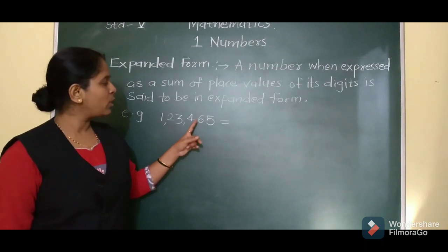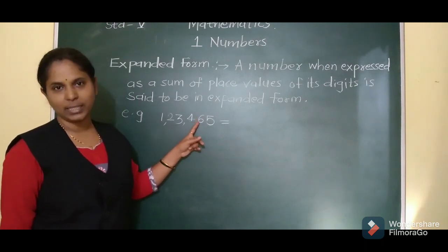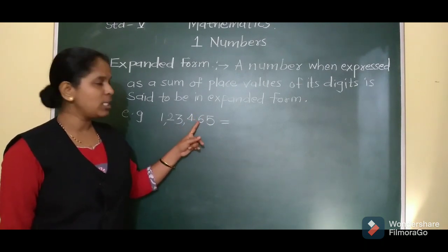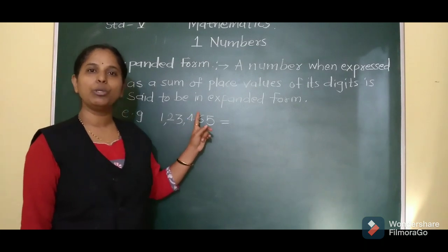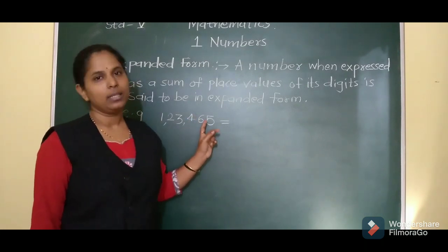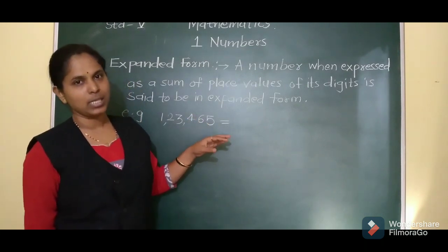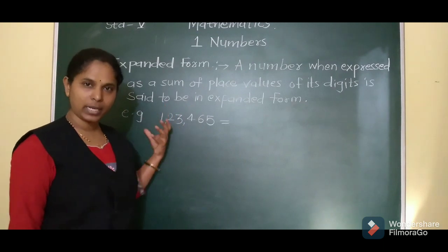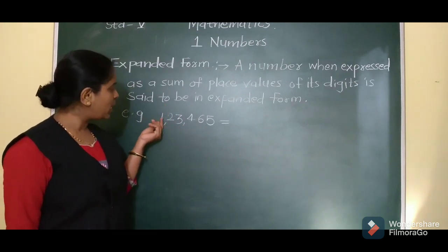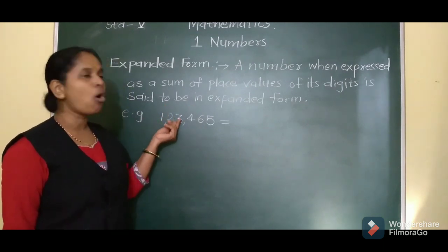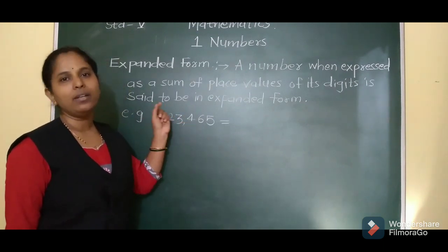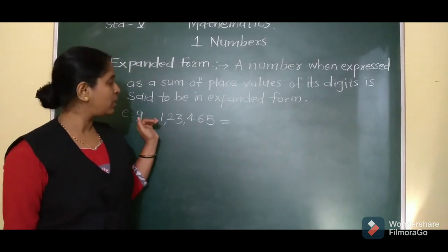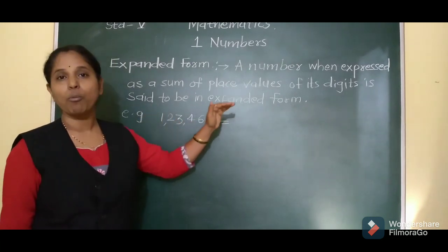What is the place value of 6, which is at the 10's place? The place value of 6 is 6 into 10, that is 60. In this way, we have to write the place values of each digit and write it in the form of addition.